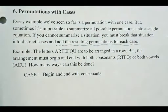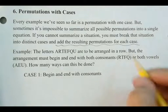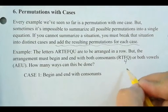Alright, so we've got these letters, A-R-T-E-F-Q-U, and they're being arranged in a row. But the arrangement must begin and end with both consonants, which is R-T-F-Q. So how many different consonants are there? Four.